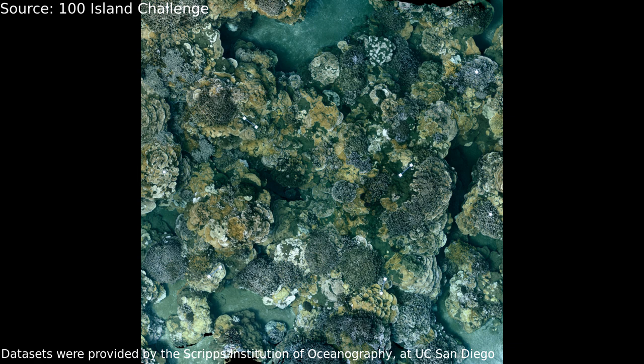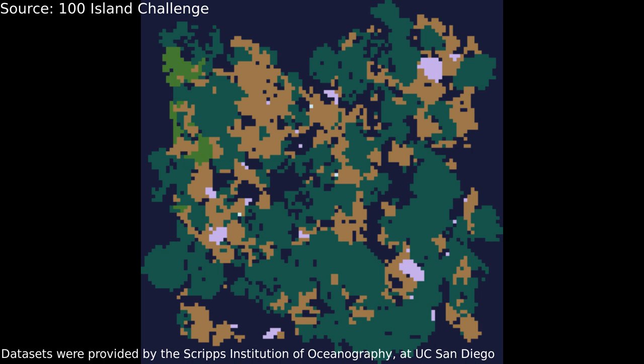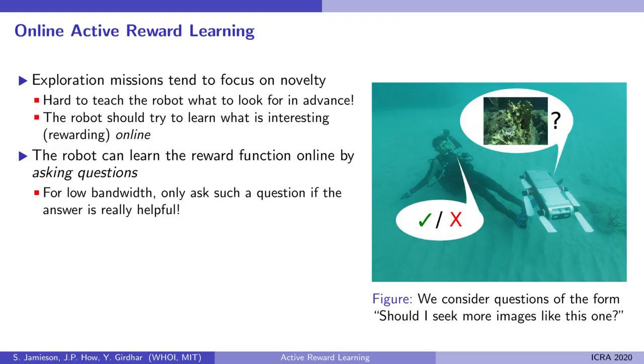Here we see a visual map of a coral reef and a corresponding topic map based on human annotations. Spatial topic models enable robots to construct maps like this one online.